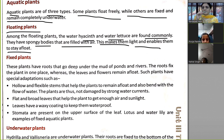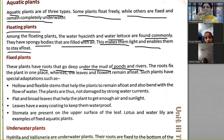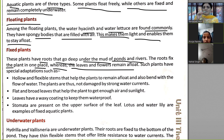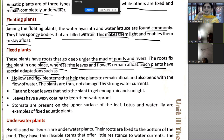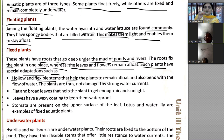Number two: fixed plants. These plants have roots that go deep under the mud of ponds and rivers. The roots fix the plant in one place, whereas the leaves and flowers remain afloat. Such plants have special adaptations such as a hollow and flexible stem that helps them remain afloat and also bend with the flow of water. The plants are thus not damaged by strong water currents.